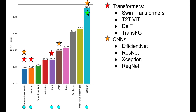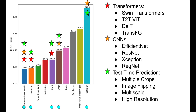Teams reported that they used EfficientNets, ResNets, Xception, and RegNet. All teams used some form of test time augmentation, which typically involved taking multiple crops of a high resolution input. Some of the teams, including the top two teams, utilized location and date information to help improve classification accuracy.